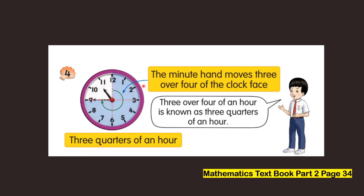Look at this. The minute hand moves three over four of the clock face. It means the minute hand moves from twelve until it points to number nine. This is what we call three over four of an hour, also known as three quarters of an hour. This shaded area is three quarters of an hour.